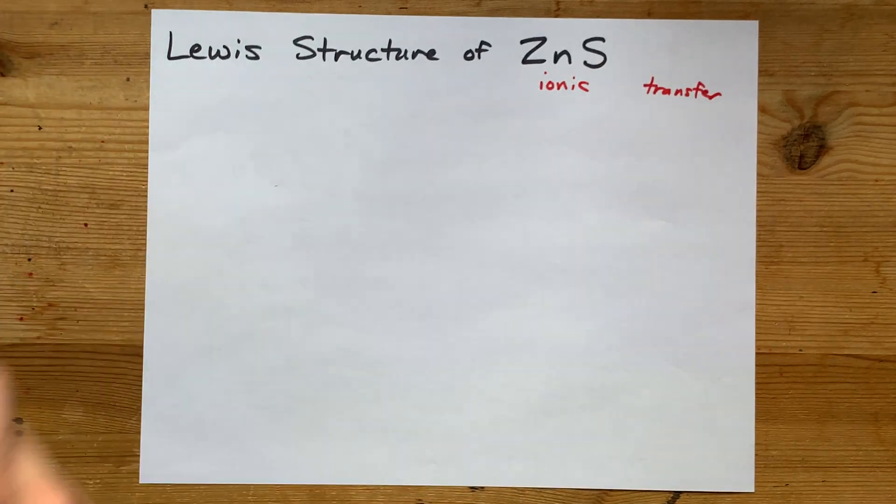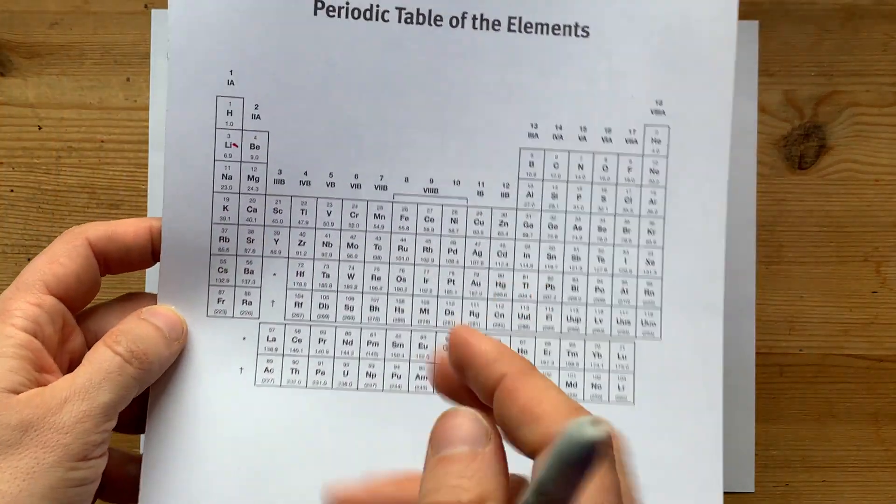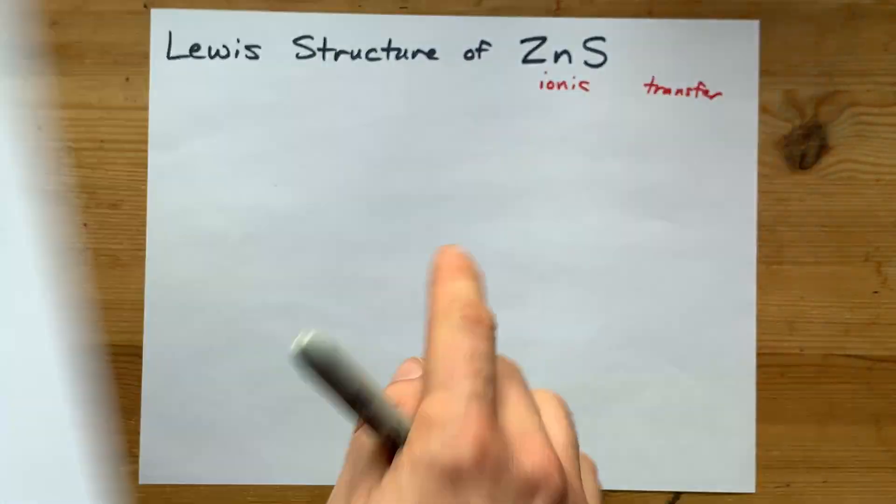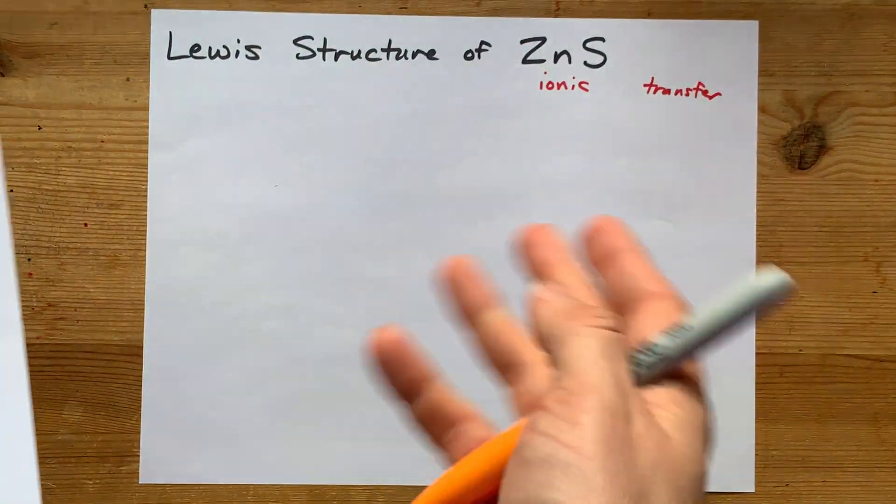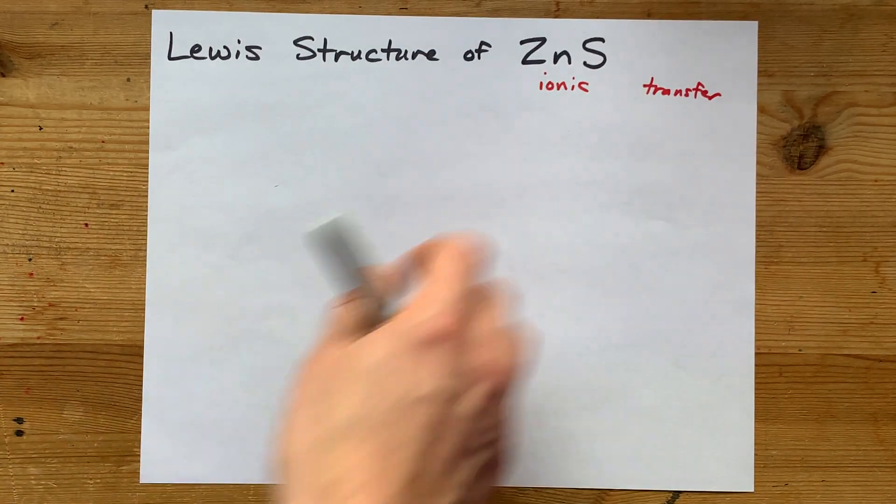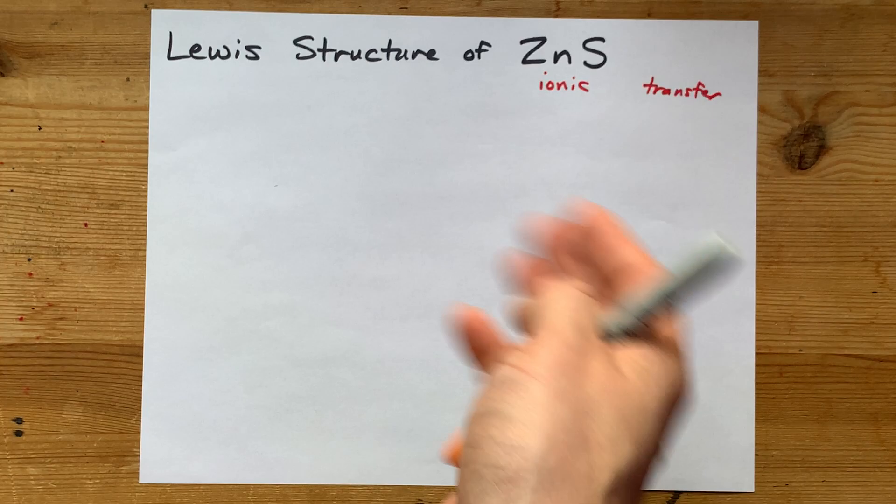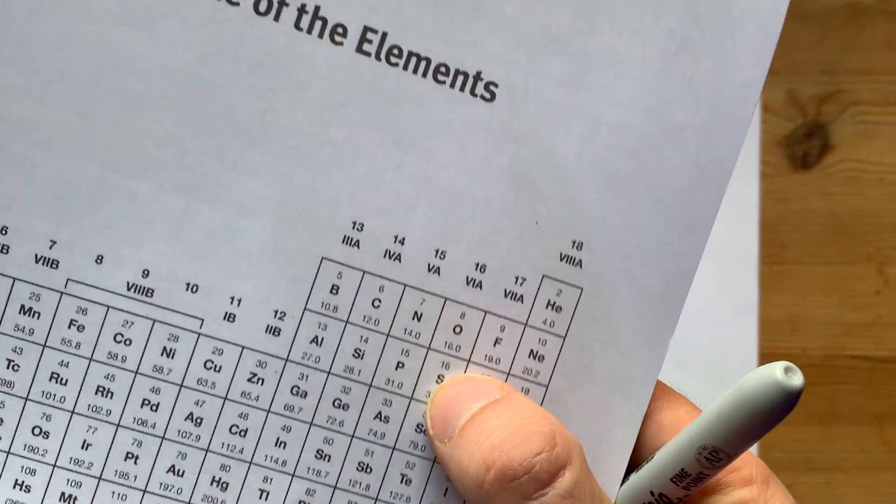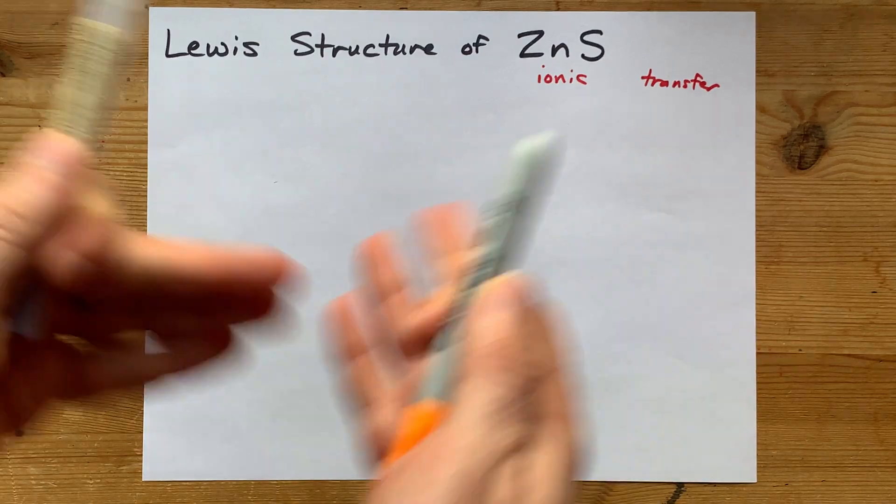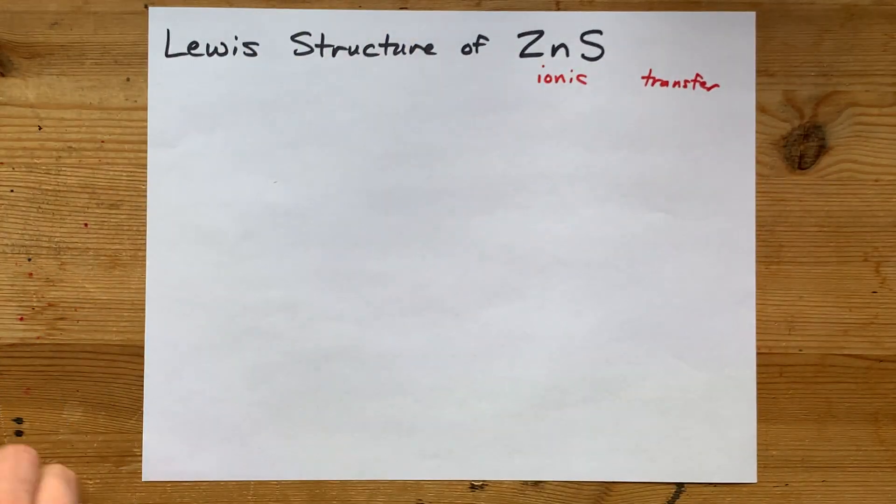Zinc brings two valence electrons with it. Now my personal cheat for any of the atoms in this block is to look at the formula of the chemical they're giving me and figure out what charge it's going to have. Sulfur wants a charge of minus two, just like all the atoms in that column, and zinc needs a charge of plus two if they're canceling out in a one-to-one ratio.